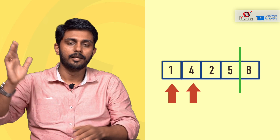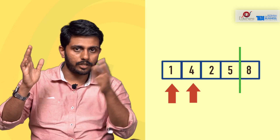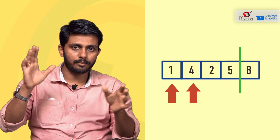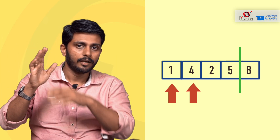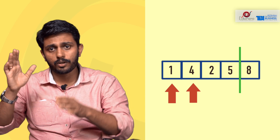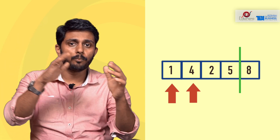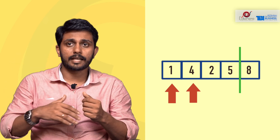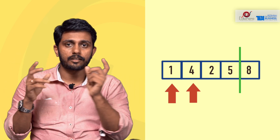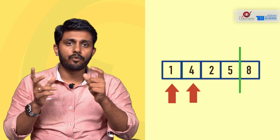We are doing this in a loop — it is a nested loop. We are going to take a loop and repeat this whole section. We are going to take a new loop. In the second pass, we are going to check 1, 4, 2, 8, 5.